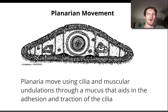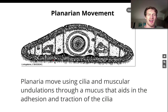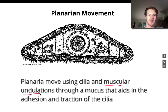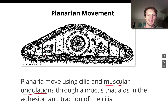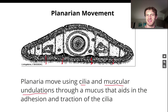Next, how these things move. It's kind of neat to watch a planaria move around in a dish. Planaria move using cilia and muscular undulations — waves that move from the head down to the tail. They move through a mucus that aids in the adhesion and traction of the cilia. Mucus flows out of little pores and makes a slippery runway for the planaria to crawl on. They're really, really slimy. You can find them under rocks in fresh water, and when you hold them, they crawl over you and leave a slime trail.